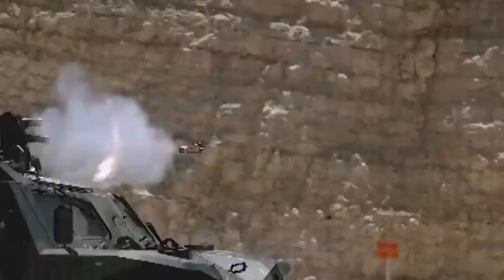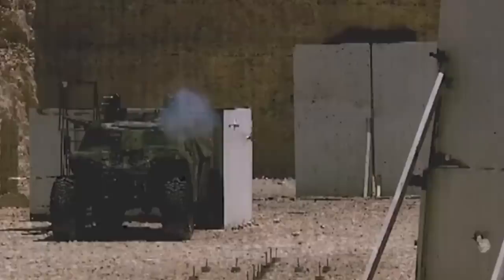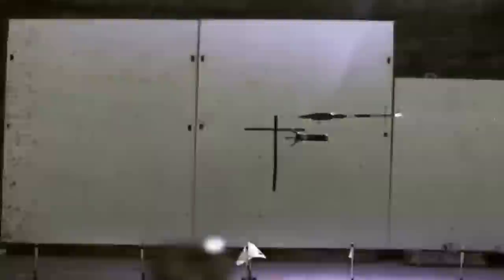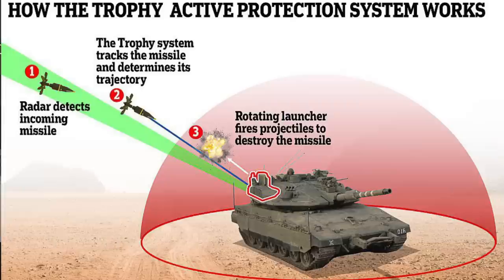Active protection systems for vehicles show some promise. There are systems which will destroy incoming enemy rockets and may even possibly degrade the effectiveness of main gun rounds one day. These systems are still in their infancy, but Israel has used the Trophy active protection system for a little over 10 years now and it seems to be working against missiles fired from Palestinian forces. So if your vehicle is equipped with this system, maintain it.